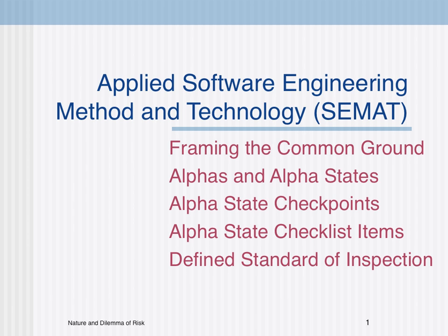Whether you establish criteria at the beginning of a project or not at all, there exist industrial-strength objective criteria for learning the status of a project and pointing the way forward. These criteria can be found in the software engineering method and theory formulation and its kernel, the essence and common ground of software engineering. The alphas and their alpha states are intended to be independent of particular methods, practices, and tools, and so possess the capability to guide progress and assess status of any software project, regardless of method and practice selections.